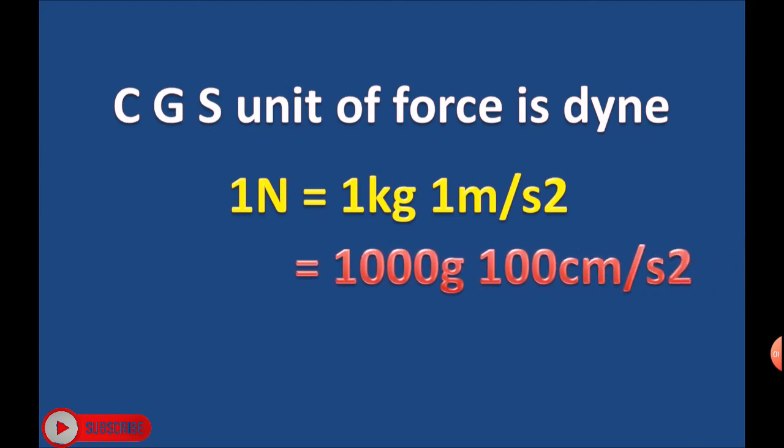1 kg is equal to 1000 grams and 1 meter is equal to 100 centimeters per second squared, which equals 10 to the power 5 dyne, and therefore 1 Newton is equal to 10 to the power 5 dyne.